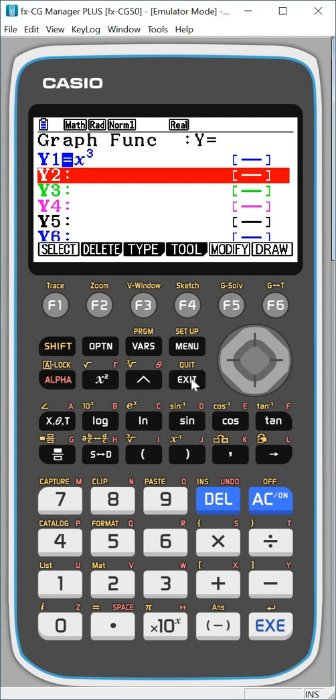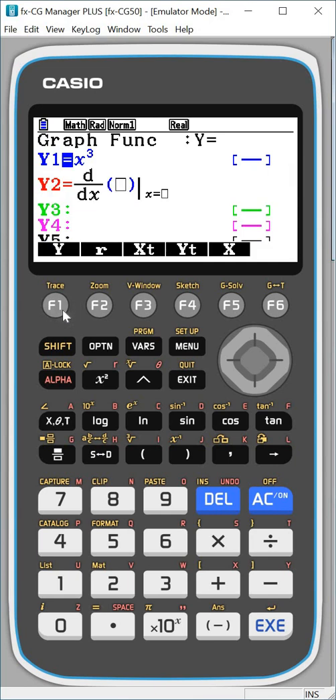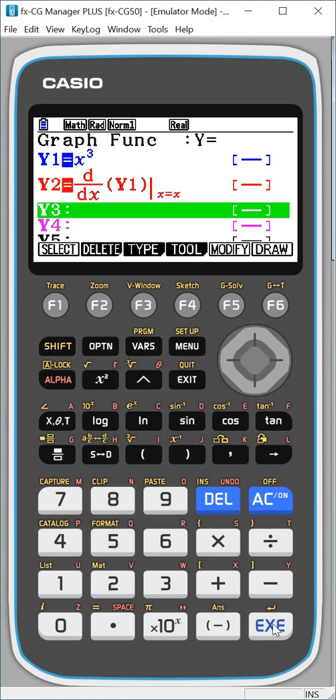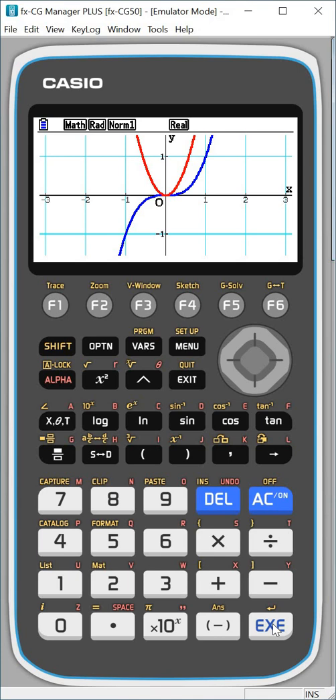So I'm going to do options and then calc. And I've got d by dx and I can't be bothered to type in X cubed again because I'm being lazy. Imagine it's more complicated. So I choose F1 for Y1. So you can see the top equation is Y1. So I want to differentiate that equation. And rather than doing it just at one point, I'm going to put X in there and it'll do it for every value of X. So now the blue curve is the original X cubed and the red curve is the derivative of X cubed.